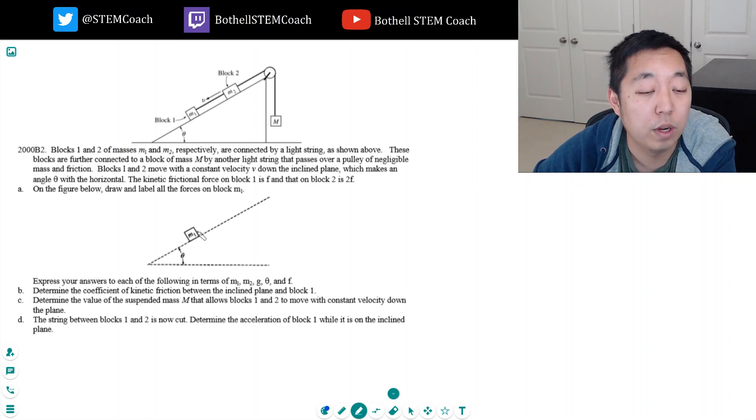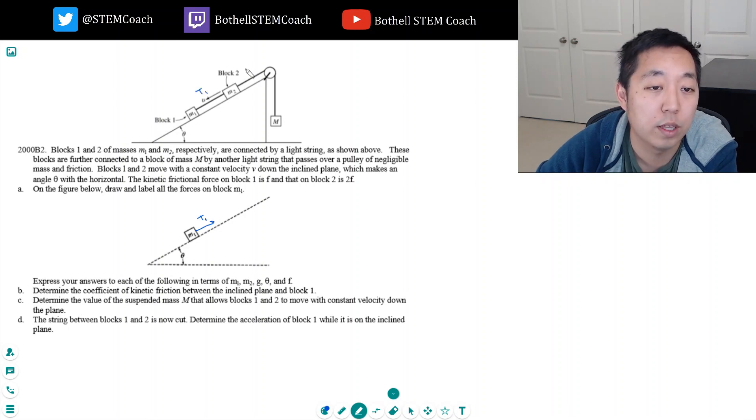M1 has some tension. I'm going to call this the tension in rope 1 and this is tension in rope 2, so this is T1. He's got M1G gravity, and he's got a normal force acting on him. And he's also got a frictional force, which they said was equal to little F.